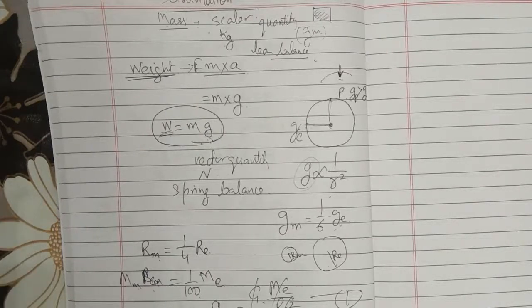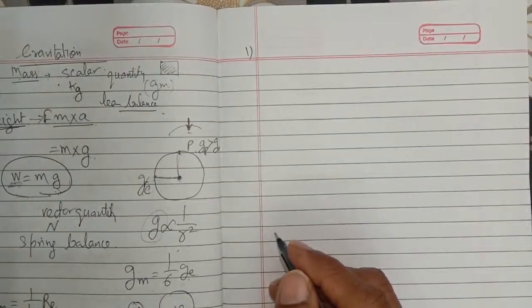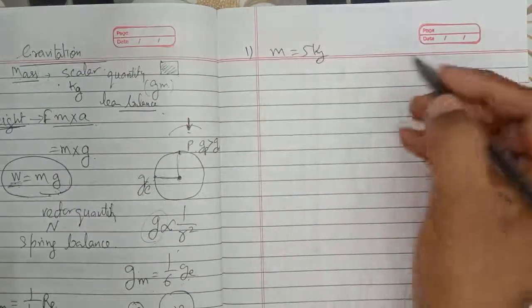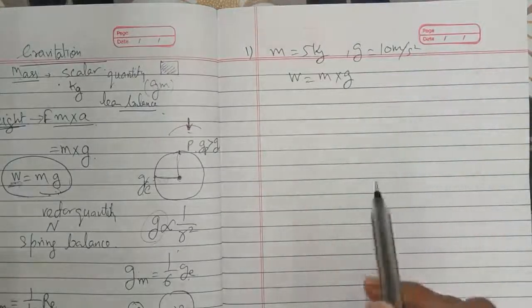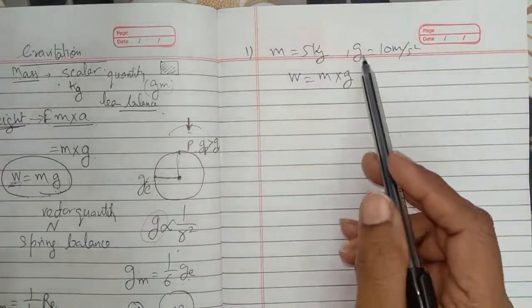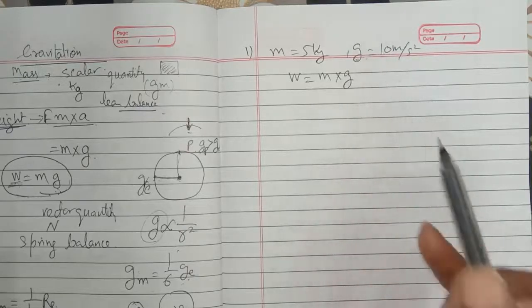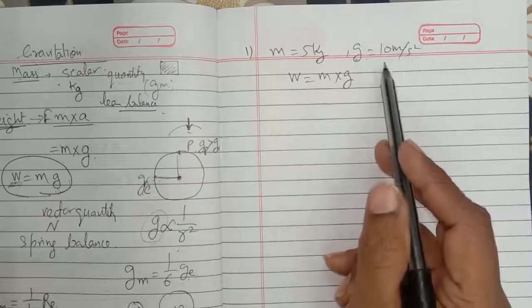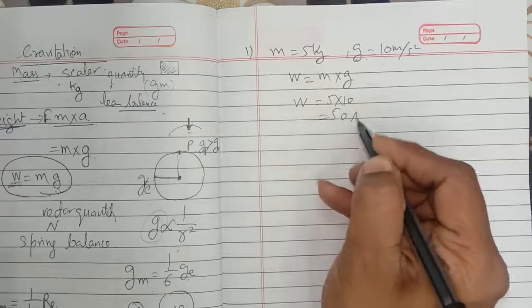Now some simple questions. Question 1: The mass of a body is 5 kg — what is its weight? Weight = mass × g = 5 × 10 = 50 Newton. Note: always use g = 9.8 m/s² unless the question specifies g = 10 m/s².